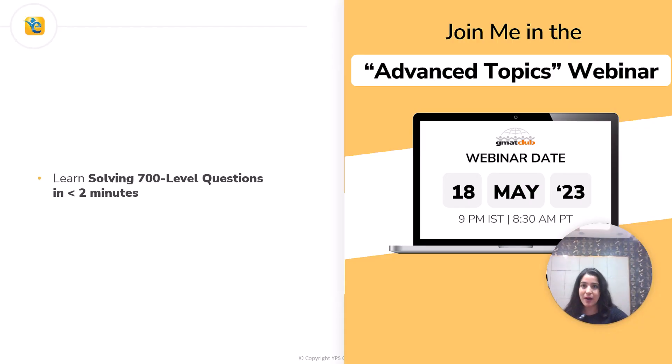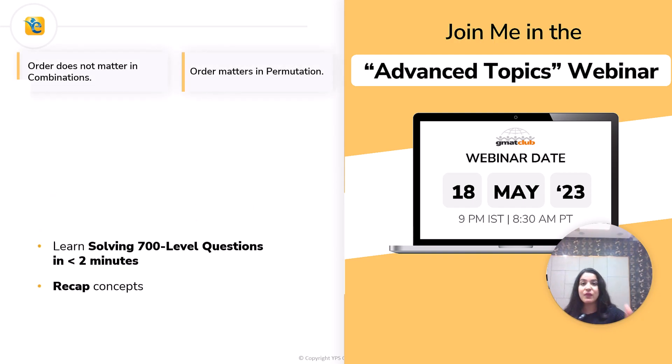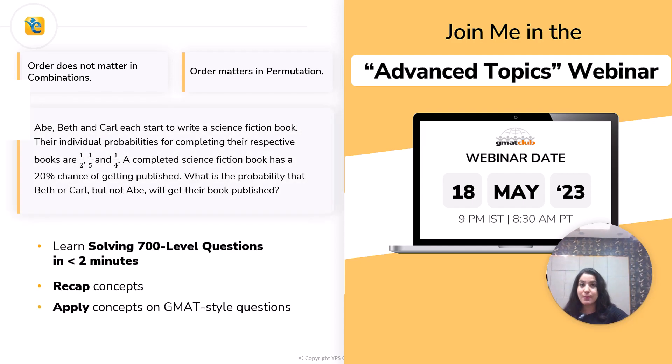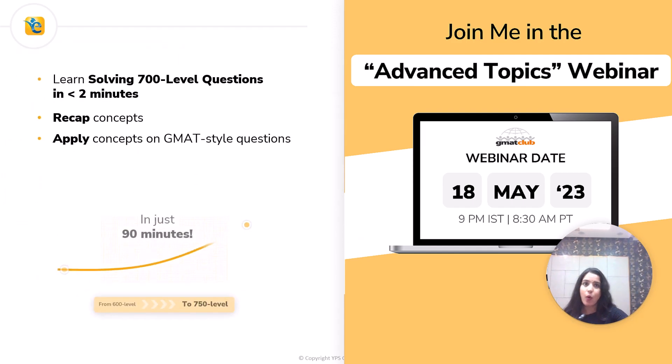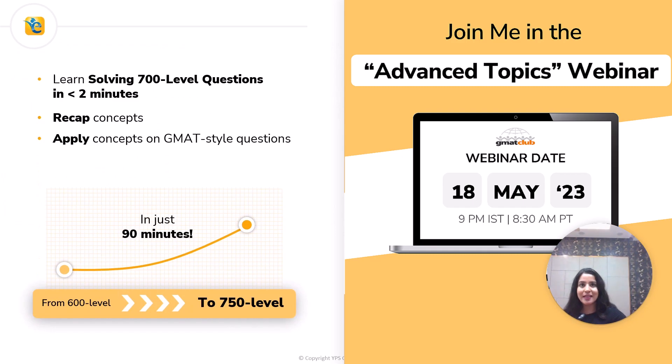Here you will learn how to solve 700+ level questions, the hardest of questions, in under two minutes. How? Again, we will begin with recapping concepts and then learning how to apply them on GMAT-style questions. So all of this - all of this journey from 600 level to 750 level - will happen in just 90 minutes. This is going to be a good investment of time that you put in.